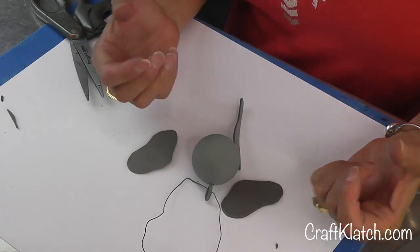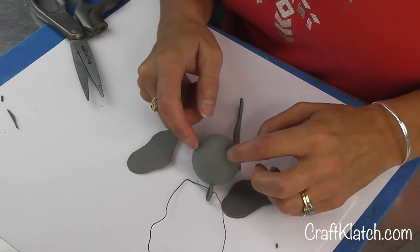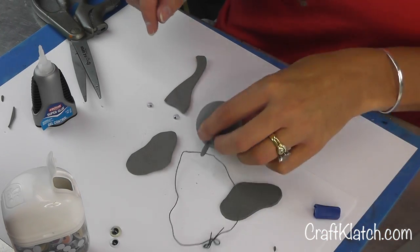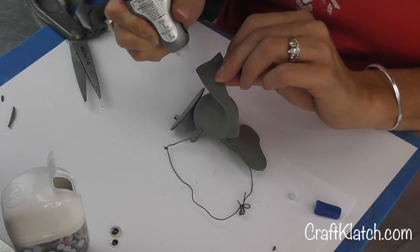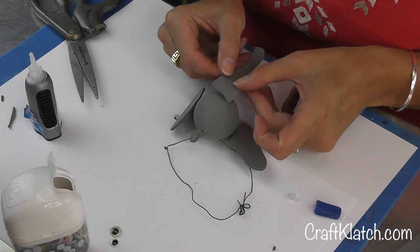Now we just need to glue it all together along with a couple of eyes. I'm going to go with these little beady eyes for the elephant. I'm using super glue for the speed of it, but you can use any type of glue that you want.